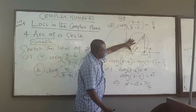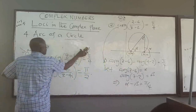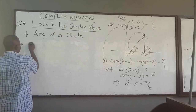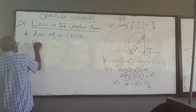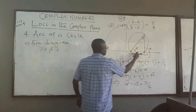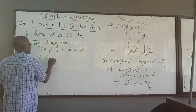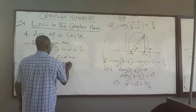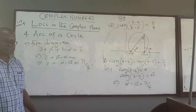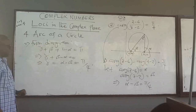To verify geometrically: from the diagram, using the triangle formed, we have gamma plus beta plus (pi minus alpha) equals pi. The pi cancels, so gamma plus beta minus alpha equals zero, giving gamma equals alpha minus beta. From the equation, alpha minus beta equals pi over 4, so gamma equals pi over 4. This confirms that the angle subtended at the arc is pi over 4, which is consistent with the equation given.